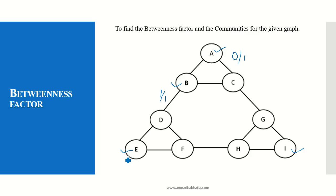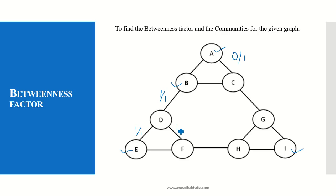When I have to reach from A to E, the path is A to B, B to D, and D to E. That's the only shortest path available and B comes into the picture, so from A to E with B as a betweenness node it is 1 upon 1. When I have to reach from A to F, the path is A, B, D, F. This is the only shortest path. There is another path A, C, G, H to F but that is not the shortest. So it is 1 divided by 1.